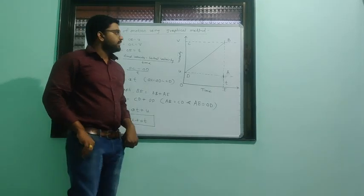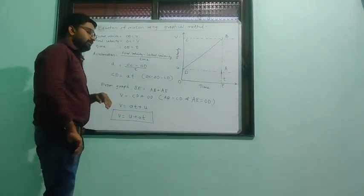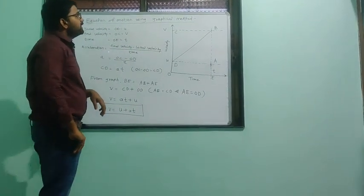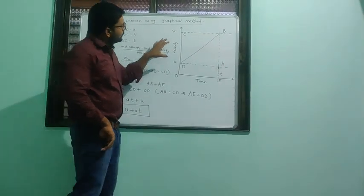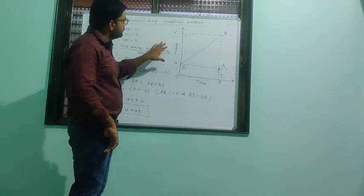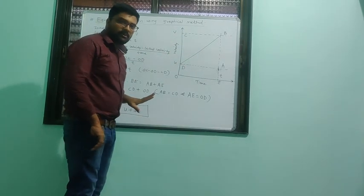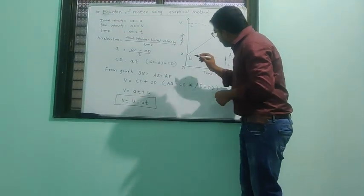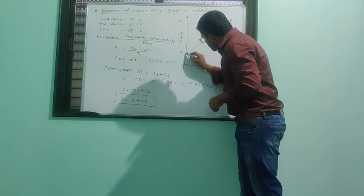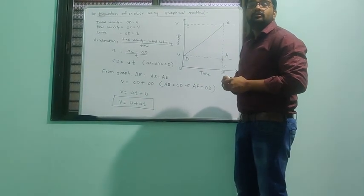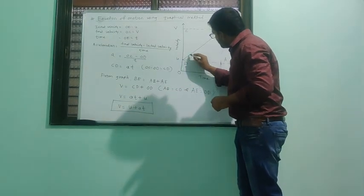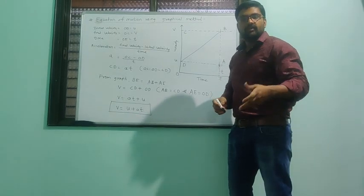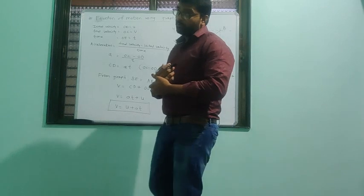We have to prove the first equation of motion, V = U + AT, using the graphical method. Look at this graph: an object starts moving, and this is a straight-line velocity-time graph — it means the acceleration is uniform.